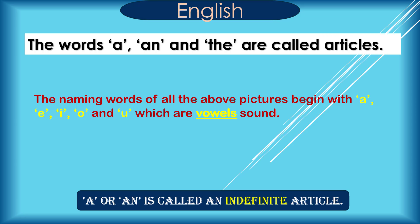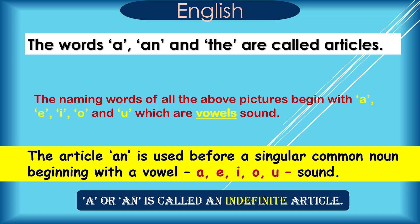The naming words of all the above pictures begin with A, E, I, O, and U, which are vowel sounds. The article AN is used before a singular common noun beginning with a vowel — A, E, I, O, U sound. A or AN is called an indefinite article.